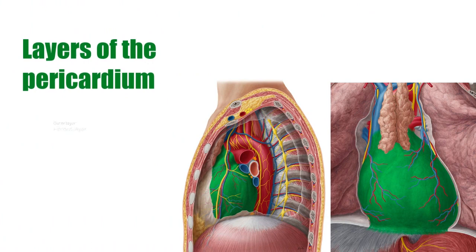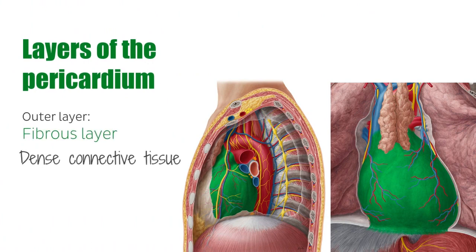The outer layer of the pericardium is known as the fibrous layer and consists of dense connective tissue. It is attached to the central tendon of the diaphragm via the pericardiacophrenic ligament, whose fibers merge with the tunica adventitia of the vessels which enter and exit the heart.